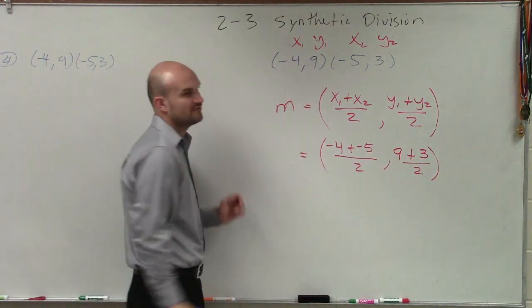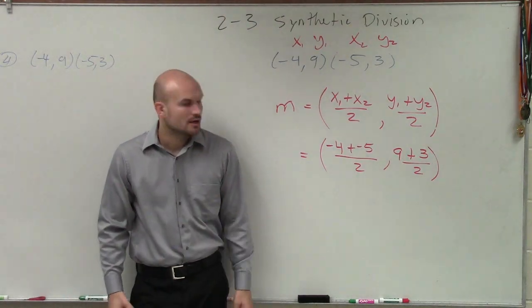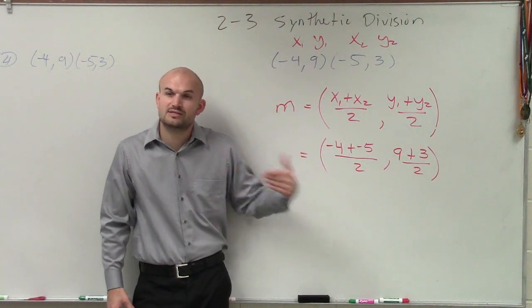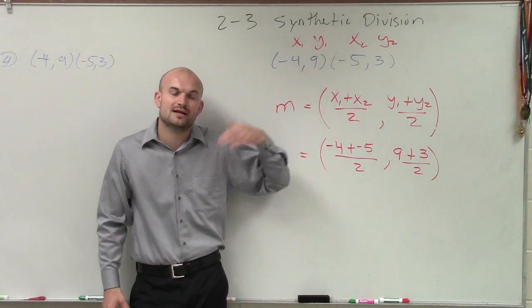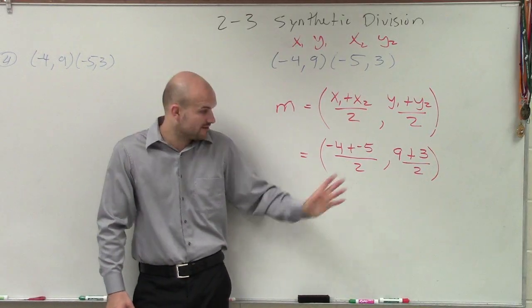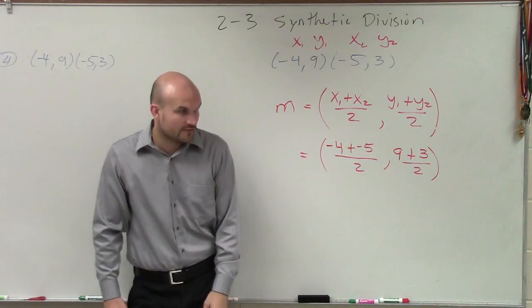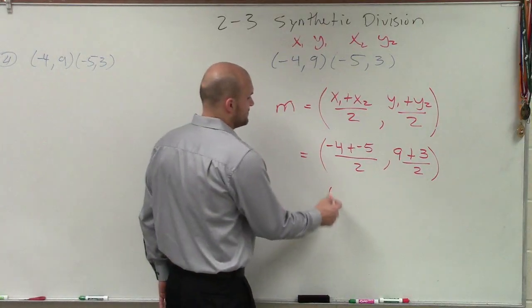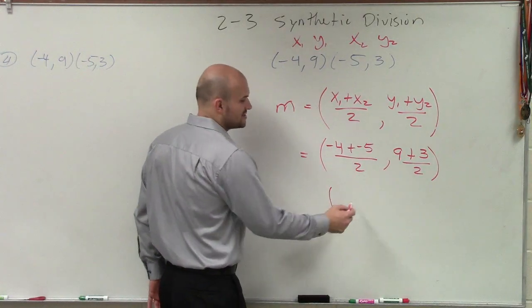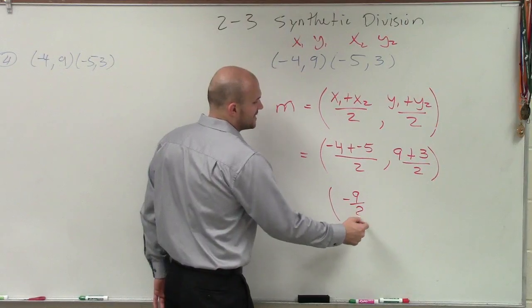Now we just simplify our definition. Now, remember, when using our operations and we're simplifying this, we simplify our numerator and our denominator first. So negative 4 plus negative 5 is going to be negative 9. Negative 9 divided by 2 is just going to leave as negative 9 halves.